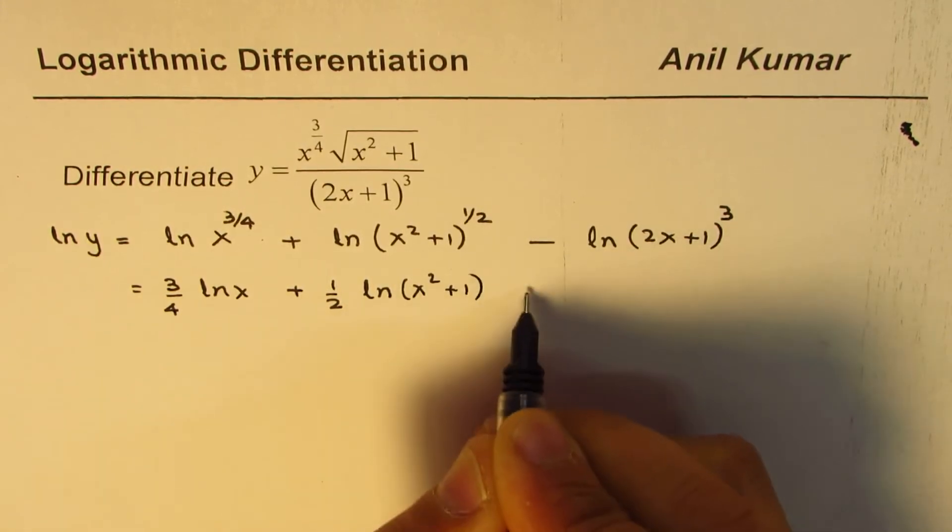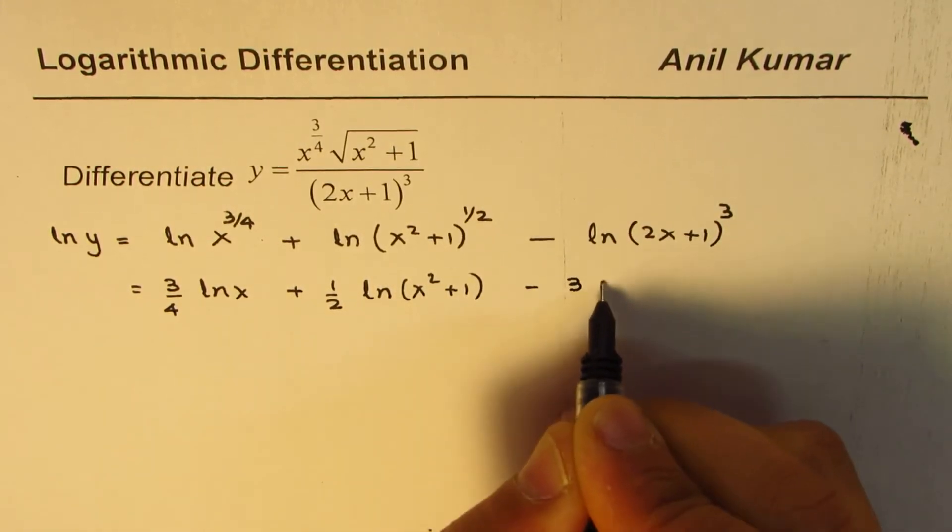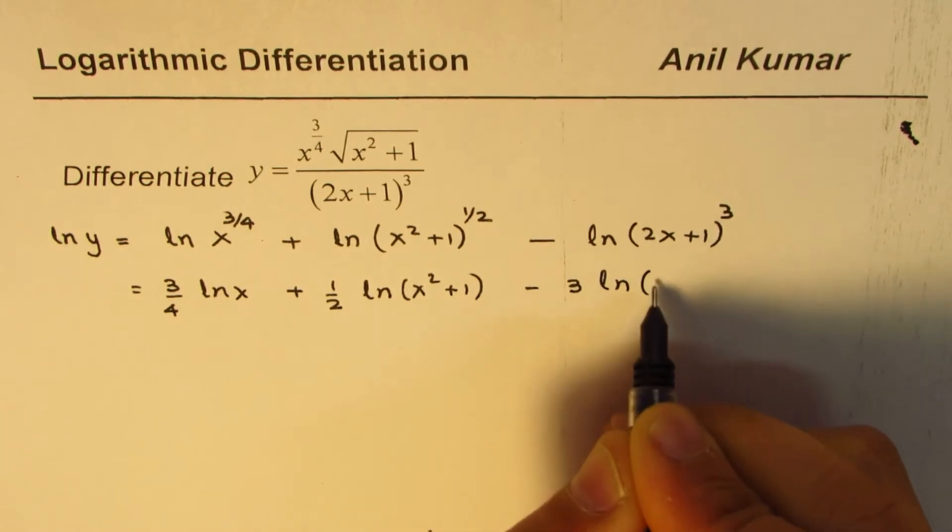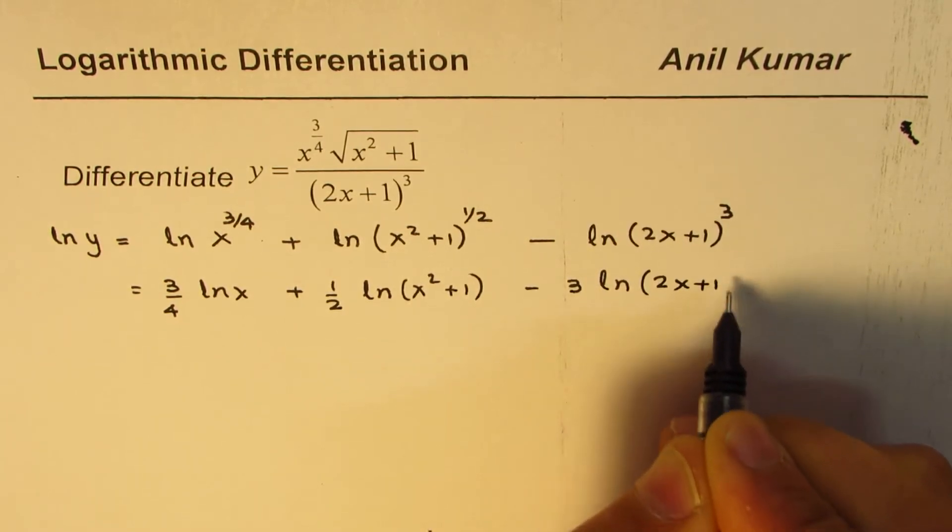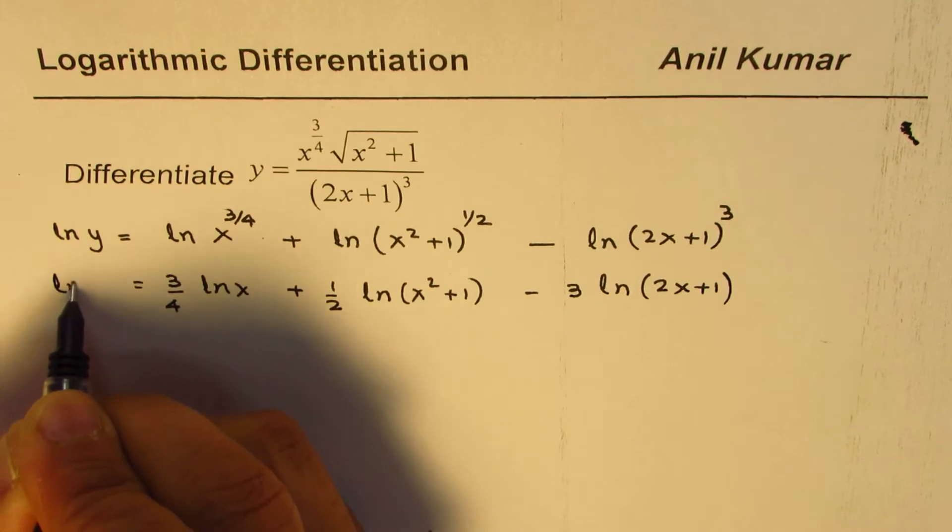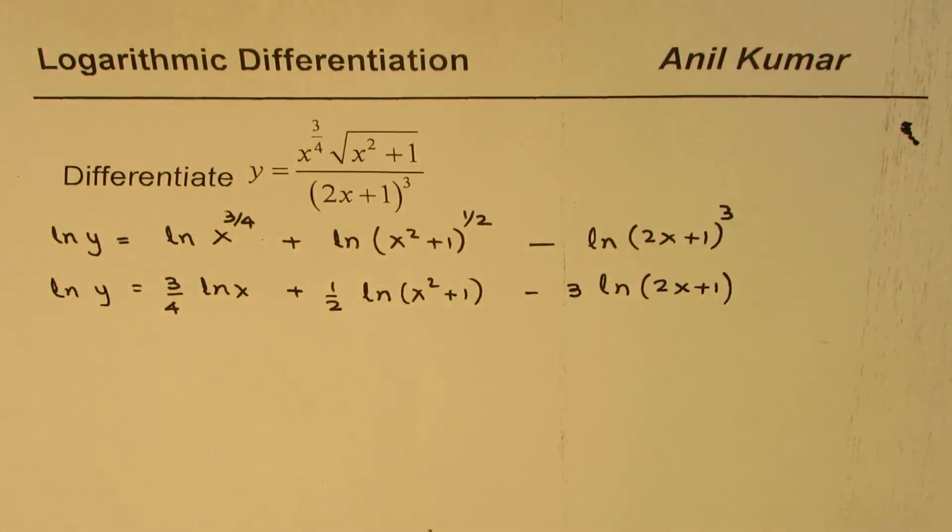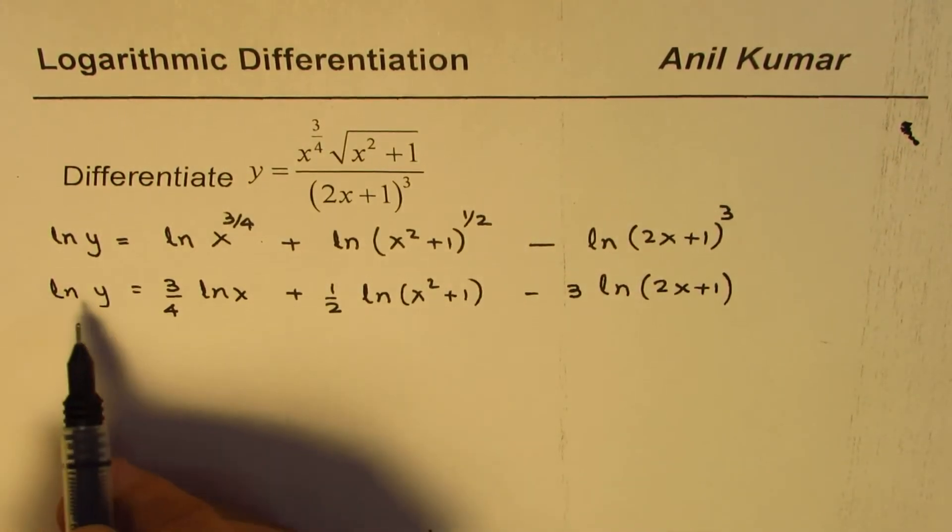This all equals ln y. Now the derivative of ln y will be 1/y times y'. So let's take the derivative of this.